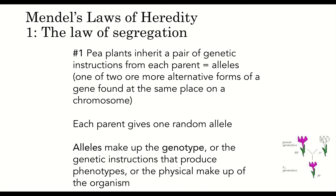Mendel is credited with producing three important insights upon which the field of genetics was built. The first of his three conclusions is called the law of segregation. Each inherited trait is defined by a gene pair. Parental genes are randomly separated to sex cells so that sex cells contain only one gene of the pair. Offspring therefore inherit one genetic allele from each parent when sex cells unite in fertilization. Each parent gives one random allele to the offspring.